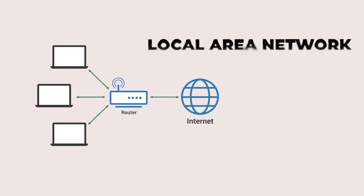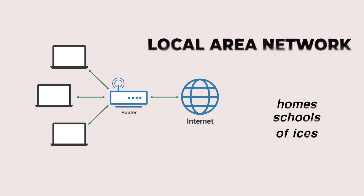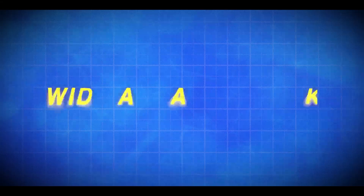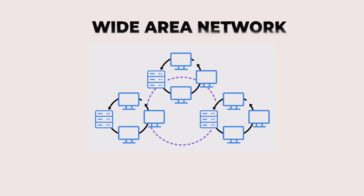Not all networks are the same. Depending on their size and scope, we classify them into different types, each with its specific purpose. A LAN, or local area network, is a network confined to a small location. You'll often find these in homes, schools, and offices — it's usually fast and secure because it's controlled within a limited area. A WAN, or wide area network, is a larger network that spans cities or even countries, like the internet. This type requires extensive infrastructure, often managed by ISPs.